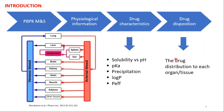PBPK is used to predict drug distribution to each organ and tissue of the body. When you use PBPK, each organ or tissue is defined by its blood flow — arterial and venous — according to its volume, size, and other characteristics such as gender, age, weight, health status, and BMI.